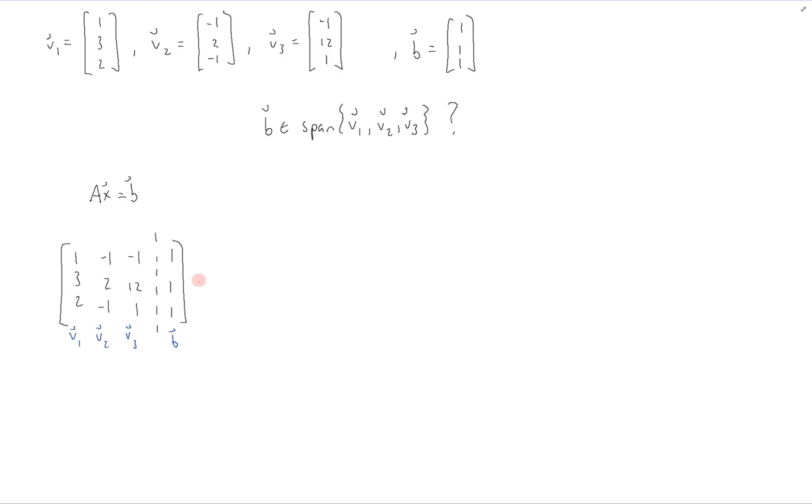So once again, we're going to row reduce this, taking row 2 plus negative 3 times row 1, and row 3 plus negative 2 times row 1, to get this.